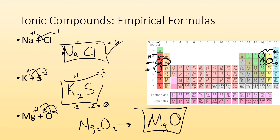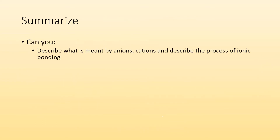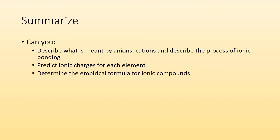You always put the positive ion first, so it's MgO. To summarize: can you describe what is meant by anions and cations and the process of ionic bonding? Can you predict ionic charges for each element? And can you determine the empirical formula for ionic compounds? I sure hope so. See you in class!